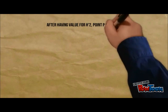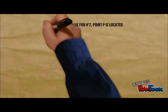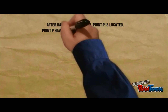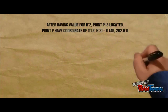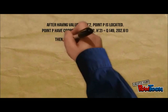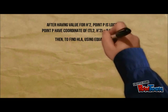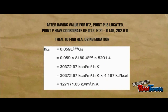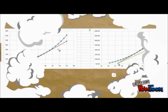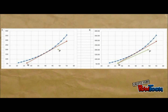After having the value of h prime 2, point P is located. Point P has coordinates of Tl2 and h prime 2, equal to 49 and 202.61. The following graph could be plotted based on the equations given above.